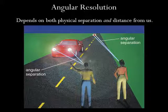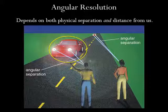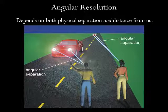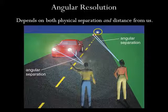The angular separation between two points of light depends on both their actual separation and on their distance from us. For example, consider a car in the distance and the same car nearby. The headlights on the car have the same physical separation in both cases, but their angular separation is larger when the car is closer. When the car is far away, we can still see the lights, but they look like one light rather than two. Similarly, two stars separated by a particular distance will have a larger angular separation if they are nearby than if they are far away.